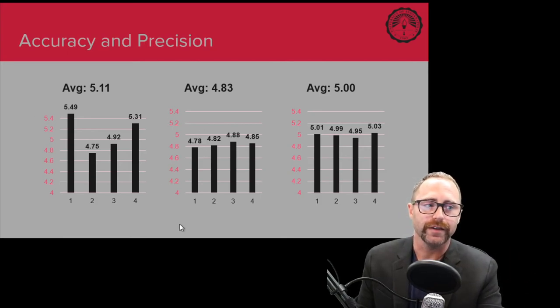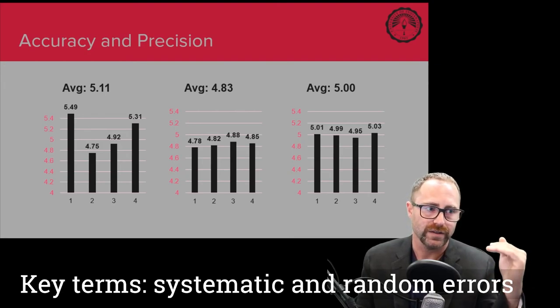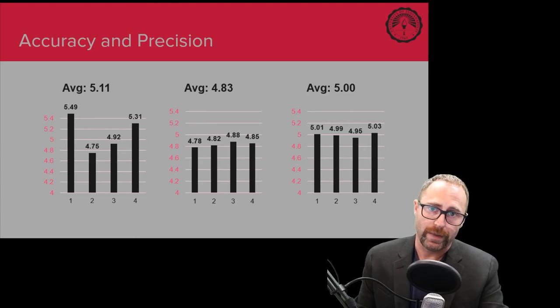The kind of error that we have here for this graph is an error that is called a systematic error. We're systematically doing something wrong, and so we keep getting the incorrect number, whereas before in the first data set, we have a random error. We're just randomly doing something wrong, and it's going to be very difficult to figure out what we're doing wrong, whereas over here with a systematic error, we can say, oh, well, we just always use the balance wrong in the exact same way or something like that.